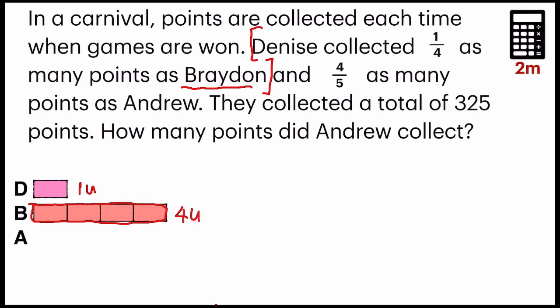The second part of the sentence — we are still talking about Denise. Denise has four fifths as many points as Andrew. So Denise has four units. We are going to cut this up into four. Four units of what Andrew has — Andrew who has five units.